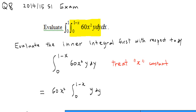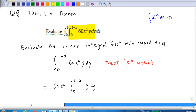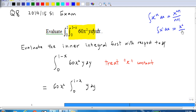Using the power rule: the integral of x^n dx equals x^(n+1) over (n+1). So for y^1, integrating with respect to y gives y² over 2, for n equal to 1.